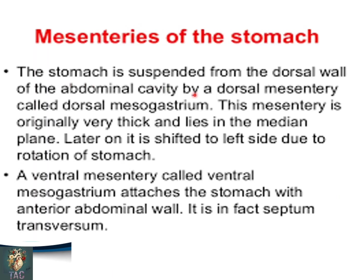The stomach is suspended from the dorsal wall of the abdominal cavity by the dorsal mesentery called the dorsal mesogastrium. This mesentery is originally very thick and it lies in the median plane. Later on it is shifted to the left side due to rotation of the stomach. The ventral mesentery called the ventral mesogastrium attaches the stomach with the anterior abdominal wall — it is in fact the septum transversum.